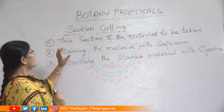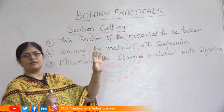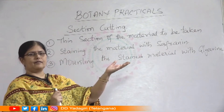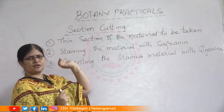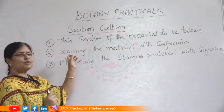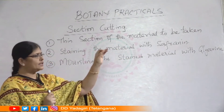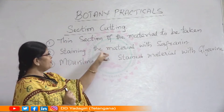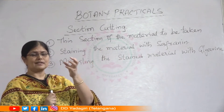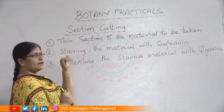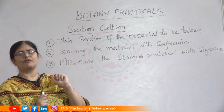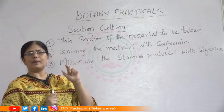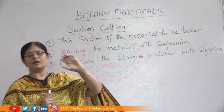In any section cutting procedure, the first step is to take out a few very thin cross sections of the given material. The second step is to stain the thin section with a stain called saffronin, which stains the lignified cells in the plant body and helps us recognize the cell conditions clearly. The third step is to mount the stained material with a drop of glycerin on a slide, giving you a temporary mounted slide for observation.